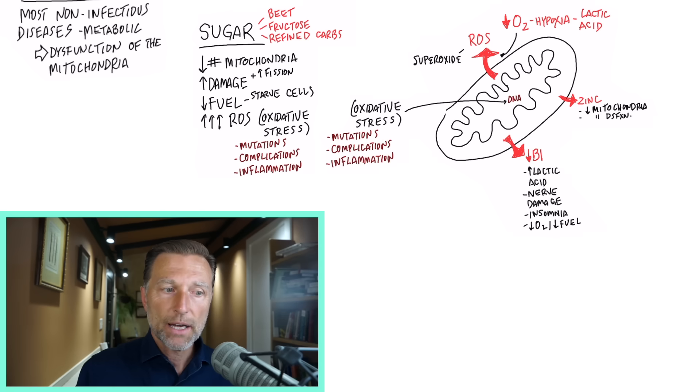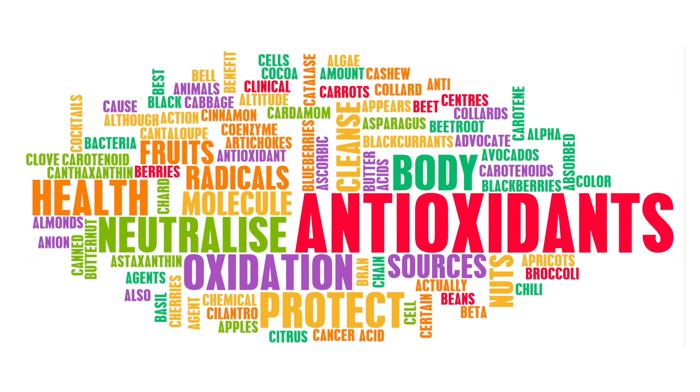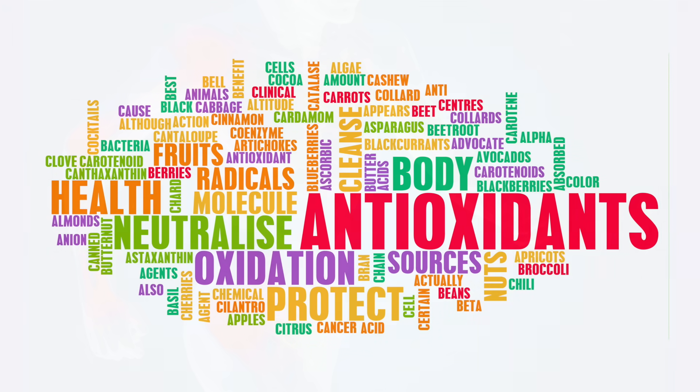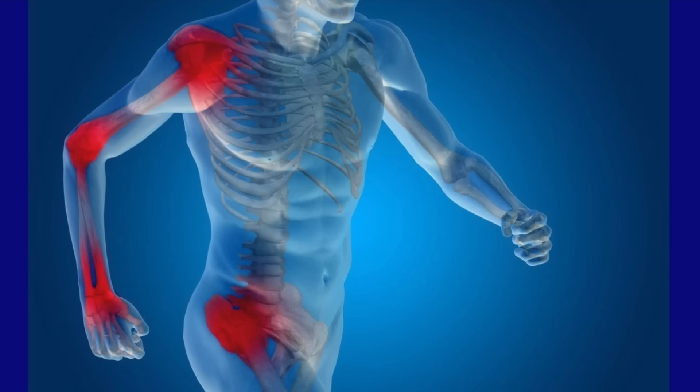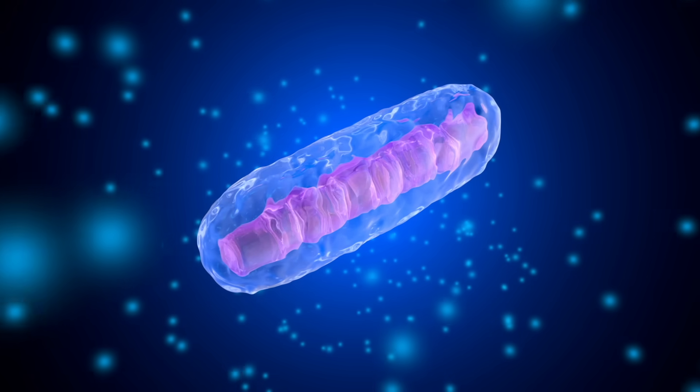This is why when you consume a lot of refined carbohydrates, you're getting in this refinement process a lot of sugar, but without all the protective mechanisms that normally come in nature, like antioxidants, that can normally counter all this oxidation. And so that equals inflammation, cell damage, and especially damage to the mitochondria itself.